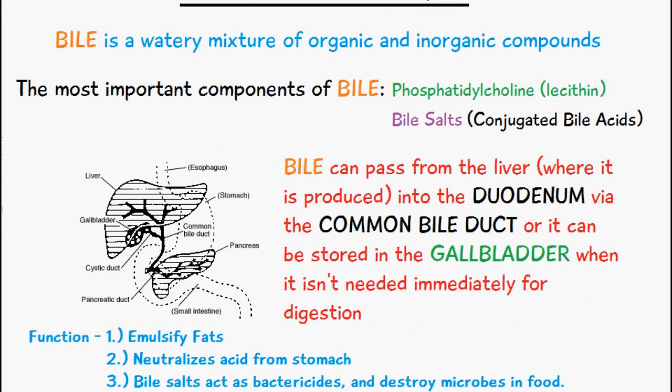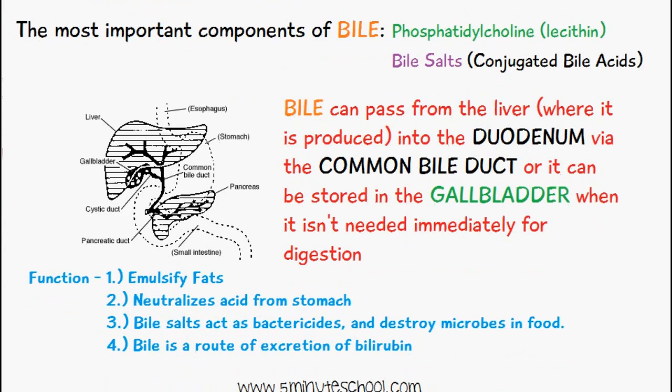So what are the functions of bile? The first is to emulsify fats. This means it breaks down fat molecules from a low surface area to a much higher surface area, breaking them down into smaller droplets so that enzymes can work on them.